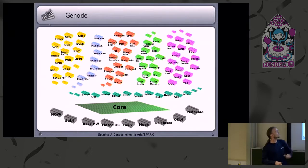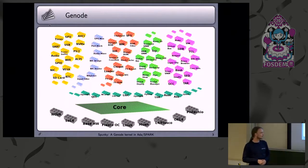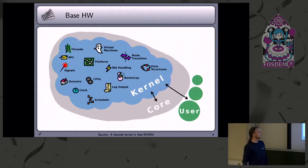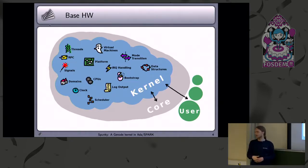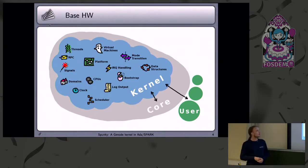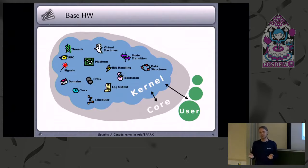I wanted to start with the BaseHW kernel because it's an in-house kernel — I know a lot about its internals, and it's very easy to modify. The BaseHW kernel is not really a self-standing kernel; it's a library that is linked against the core of Gnode. It's less than 10,000 lines of code, a lot less if you specialize on one architecture. The modules that BaseHW is made of are also pretty well separated from each other.